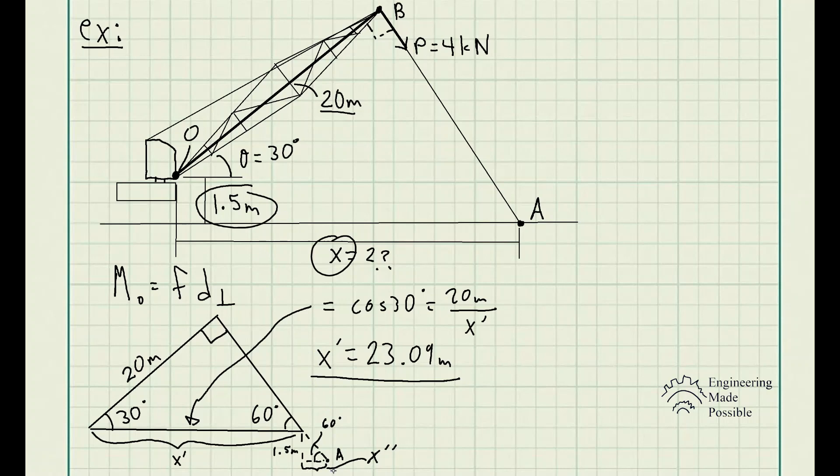Given that we have an angle, we could use tangent 60 degrees. So tangent 60 degrees equals opposite over adjacent, in this case X double prime. Of course, some algebraic manipulation—X double prime equals 0.87 meters.